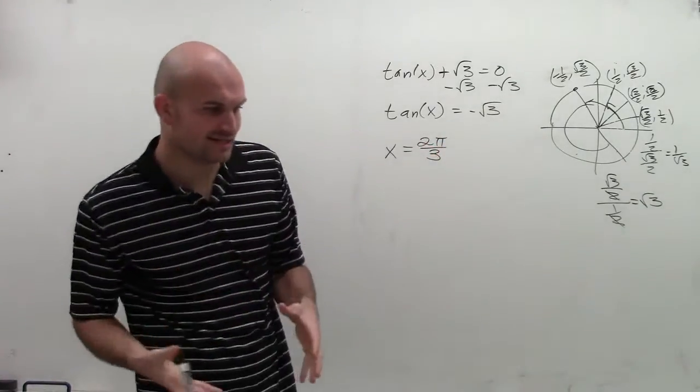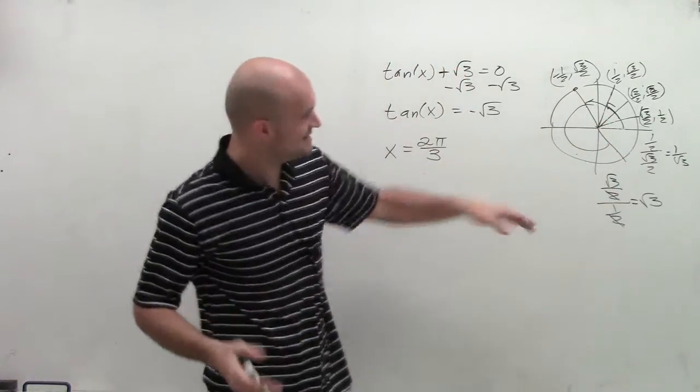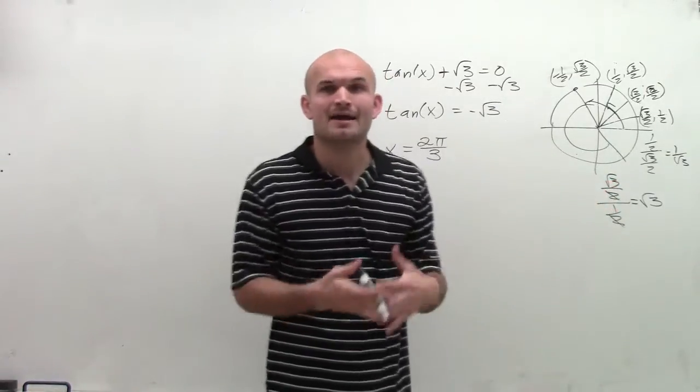Now, what we notice is, from here's my first answer to my next answer, that distance you can see is halfway around a circle, which would be π.